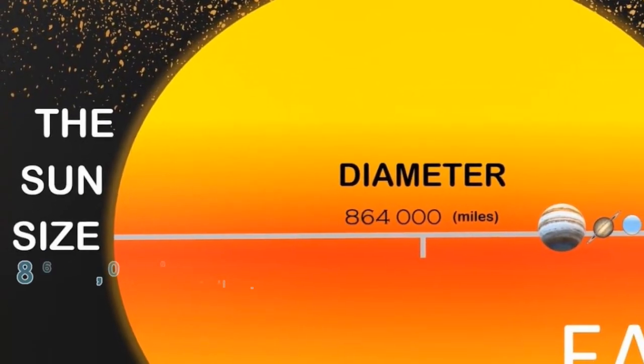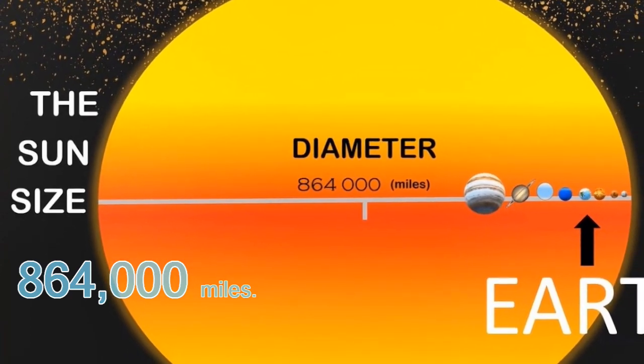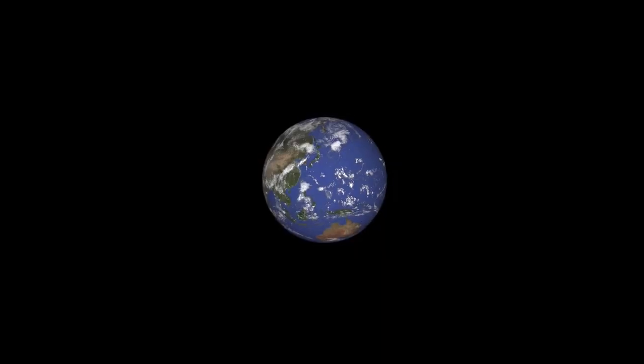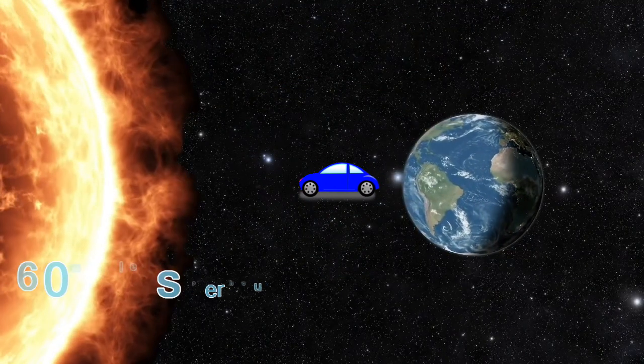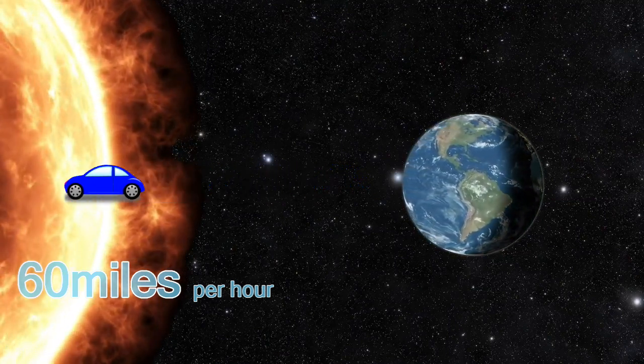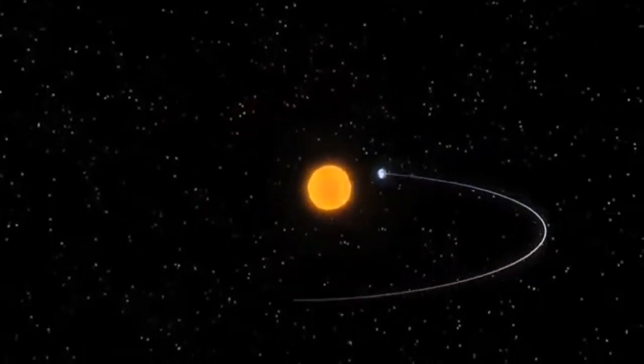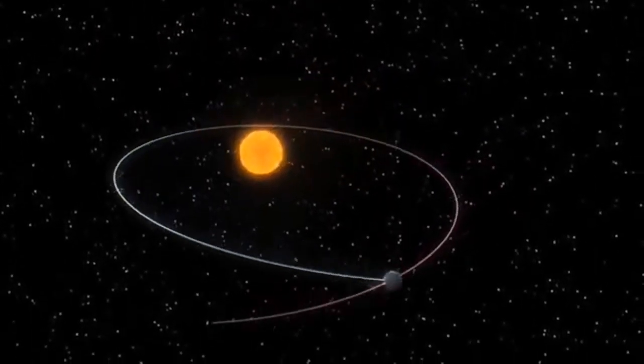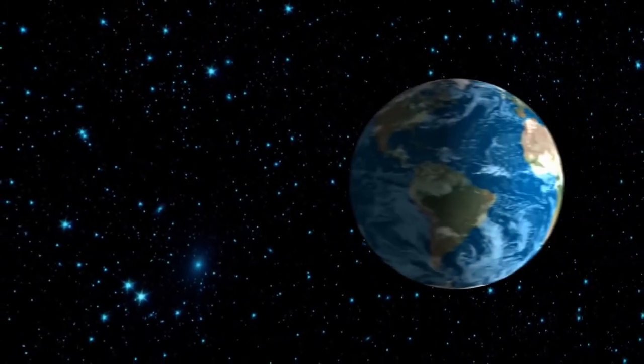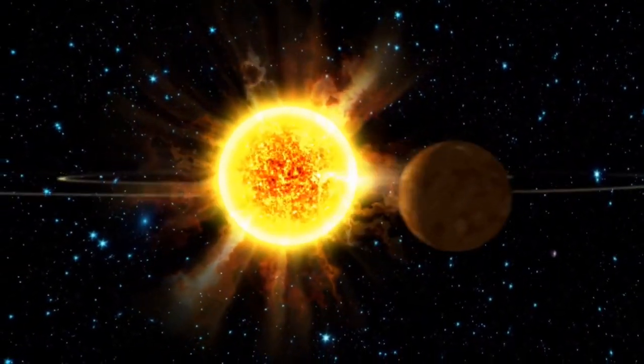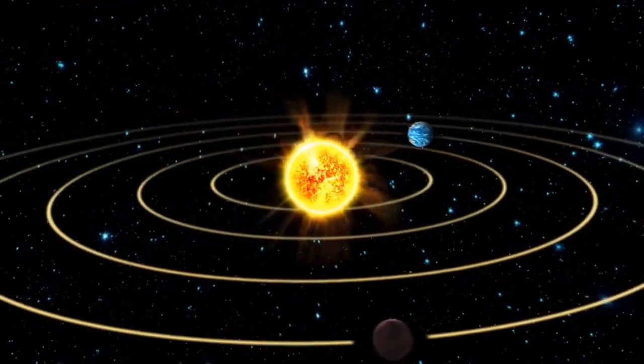The sun has a diameter of 864,000 miles. To put that in perspective, if you travelled at 60 miles per hour without having to refuel or stop for snacks and drinks, you'll need 5 years to complete a full orbit around the sun. In contrast, you'll only need 17 days to complete a non-stop trip around the Earth.